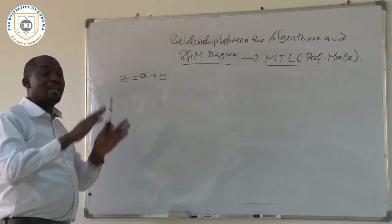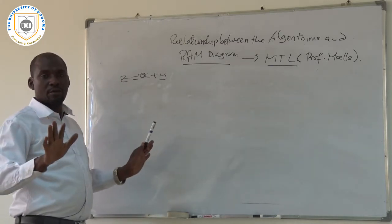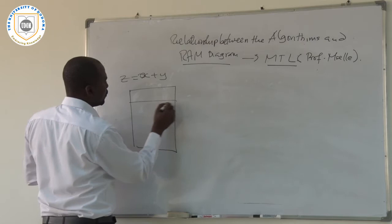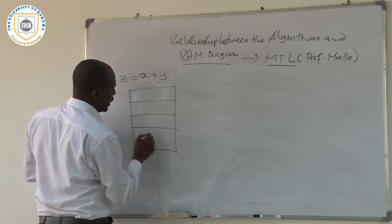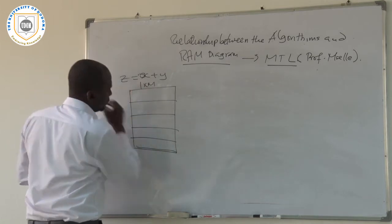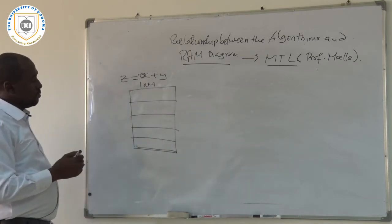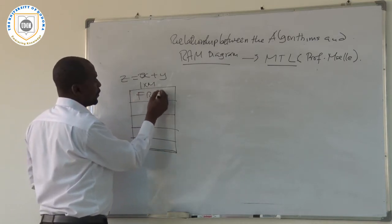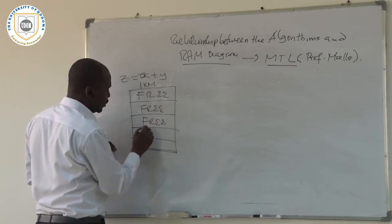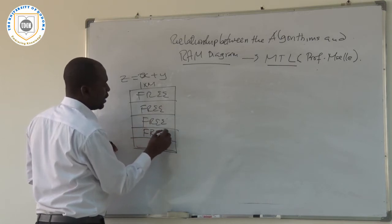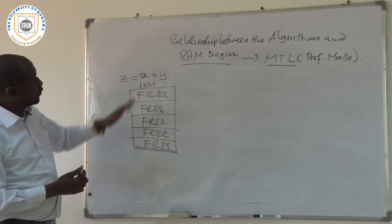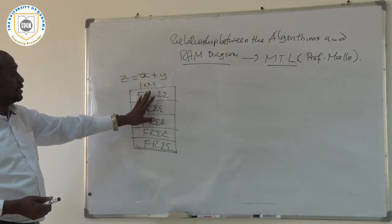In the first algorithm, I was just adding two numbers, X plus Y, to get Z. Now let's visualize the algorithm at the beginning, before anything is happening in the computer. At the beginning, the RAM in the computer — which is an M by N matrix — must be completely free when your computer is turned off and nothing is executing.